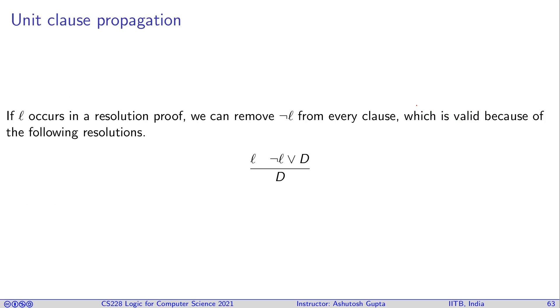Another optimization, which is called unit clause propagation, in which if you find a literal L in your CNF, which is singleton, then you can easily remove not L from everywhere because this literal has to be true. Wherever not L is appearing,